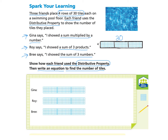First we'll start with Gina. Gina says she used a sum multiplied by a number. The word sum means when you put something together, or add. When Gina approached this problem, she saw that there were four rows and then 10 tiles in each section. So she saw 10, 10, and 10.